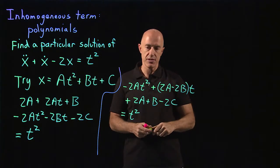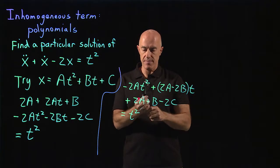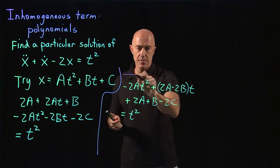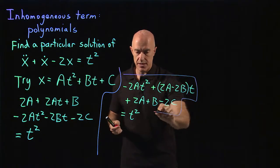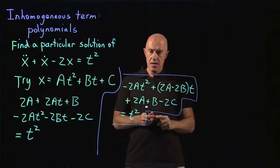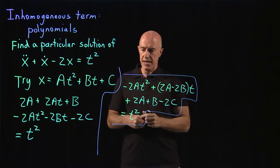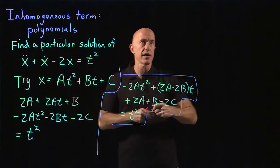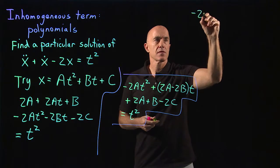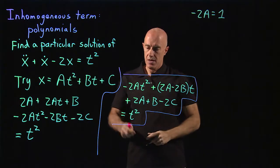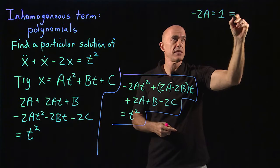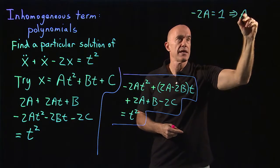So we end up with three equations. The first equation is minus 2a equals 1. So that tells us immediately that a equals minus 1 half.